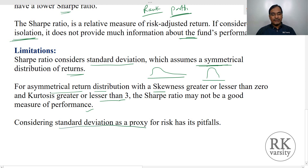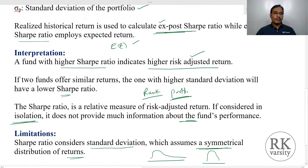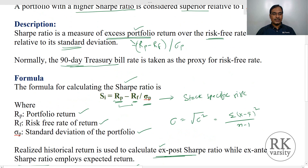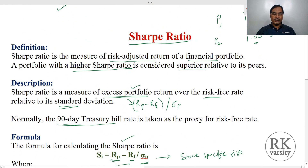Considering standard deviation as a proxy for risk has its own pitfalls. Since we are considering only the stock-specific risk, we are ignoring the market risk. If you ignore the market risk, it may not be an accurate measure. Even with these limitations, the Sharpe Index is the most popularly used risk-adjusted performance measure in evaluating portfolios, especially mutual funds and stocks.